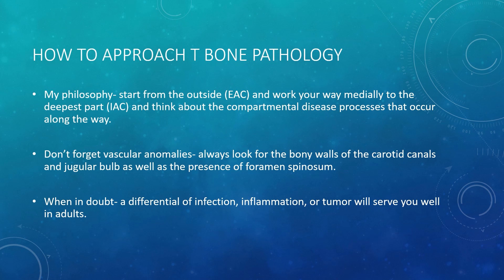While you're doing this, don't forget that there can be vascular anomalies of the temporal bone, so always look for the bony walls of the carotid canals and jugular bulb, as well as the presence of foramen spinosum. When in doubt, especially with adults, consider a differential of infection, inflammation, or neoplasm, and you'll be right about 95% of the time.